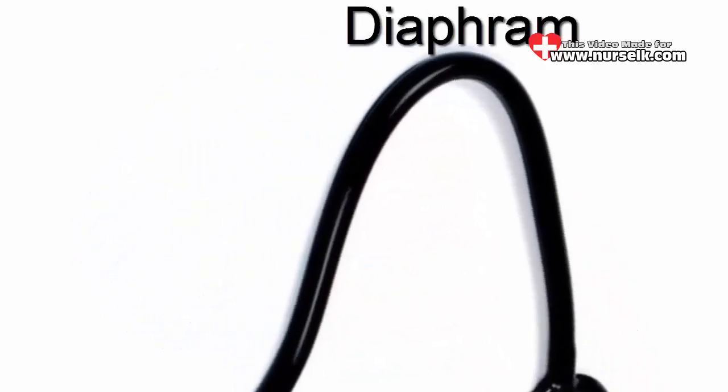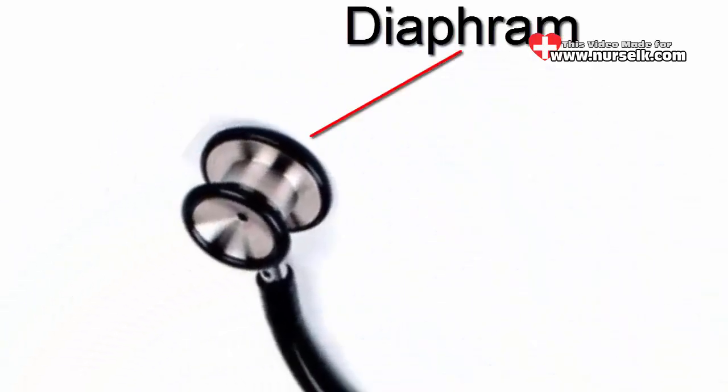Diaphragm. The diaphragm is the large circular end of the chest piece. This side of device allows medical professionals to listen to a wider area of the patient's body and picks up higher frequency sounds than the bell half of the chest piece.